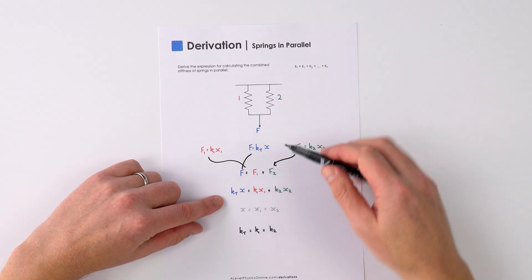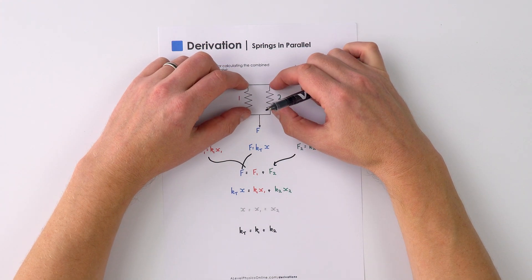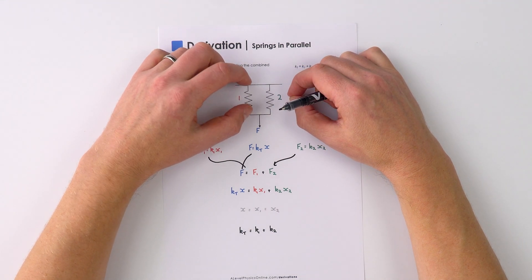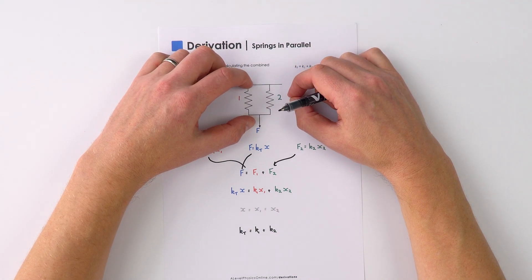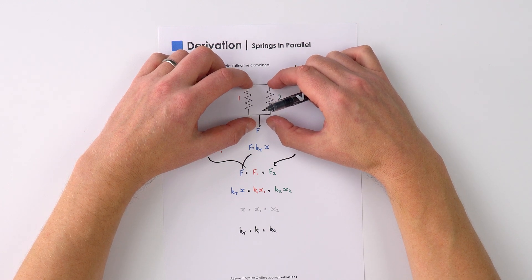Now of course, we know that the extension of all of these things is going to be identical. So just as much as spring number one is extended by distance X, spring number two is going to be extended by the same distance as well.